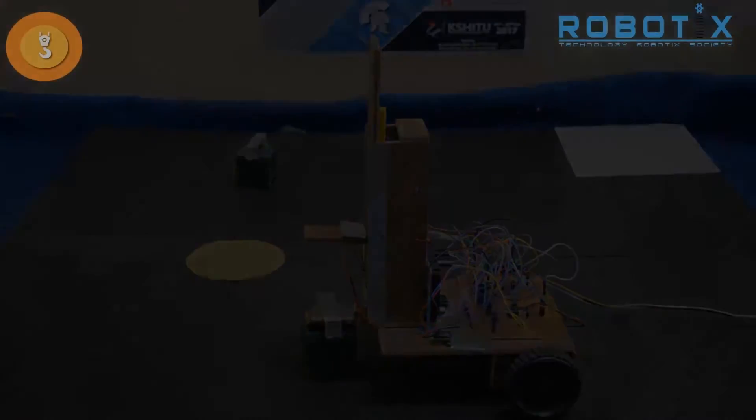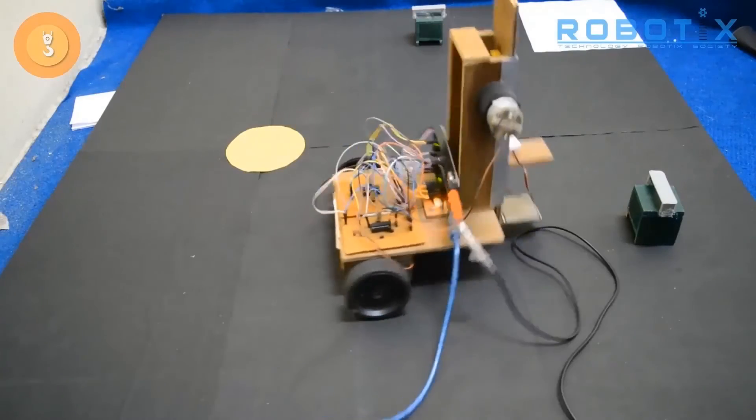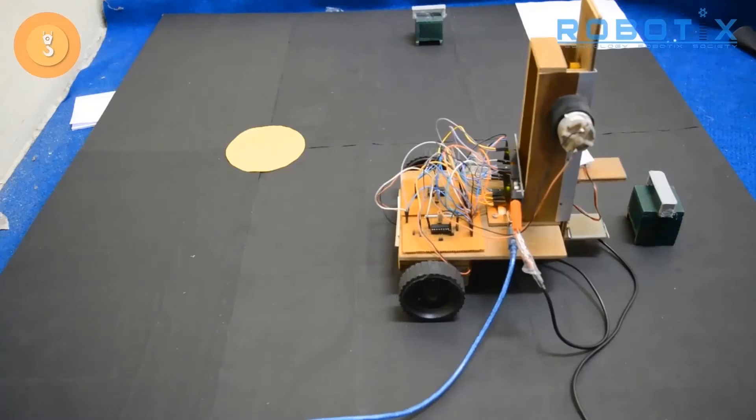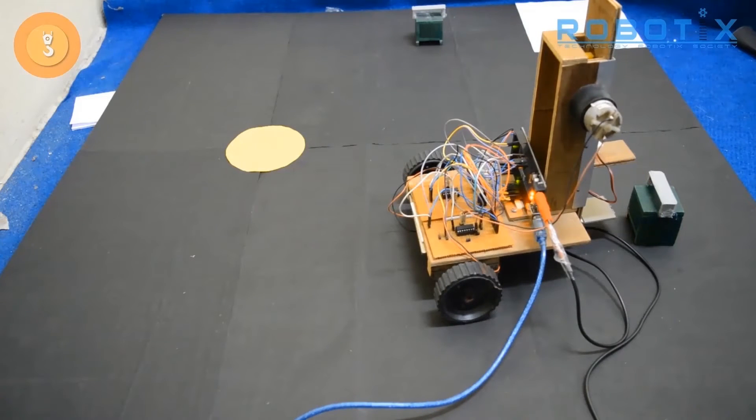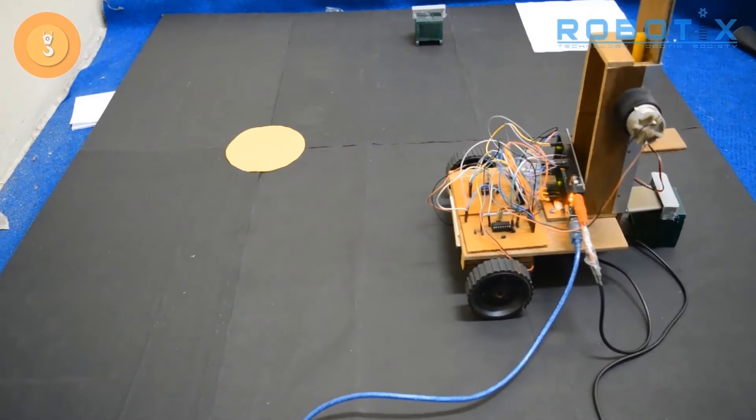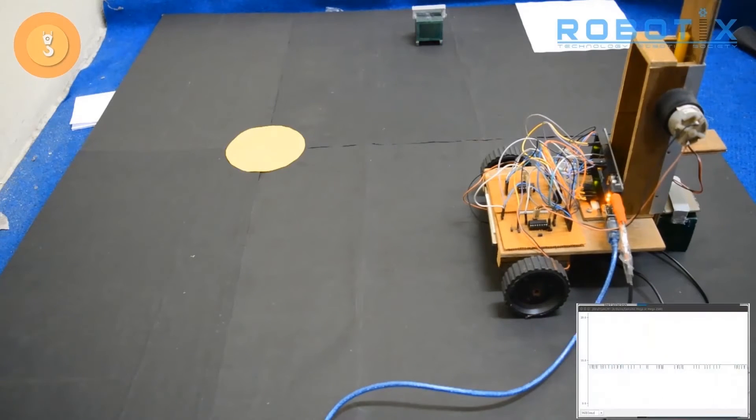For this, we use a force-dependent resistor which detects the weight of the blocks by lifting them using a forklift. The force-dependent resistor installed on the forklift gives analog values corresponding to the weight of the block.